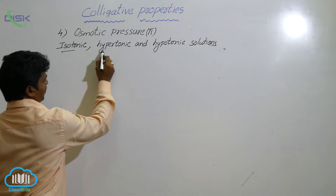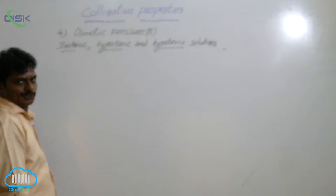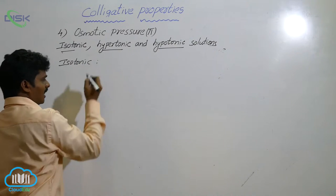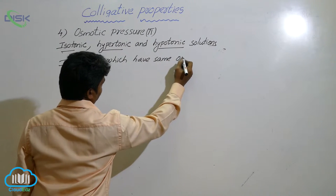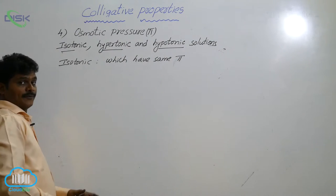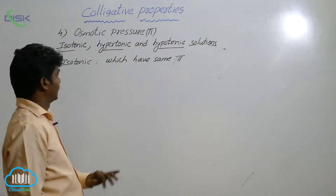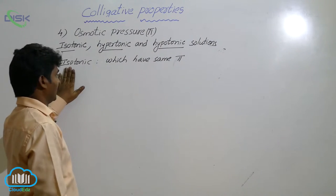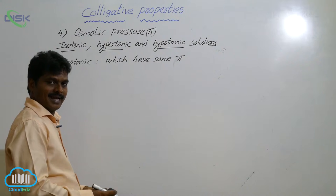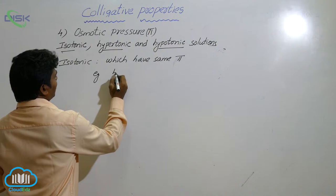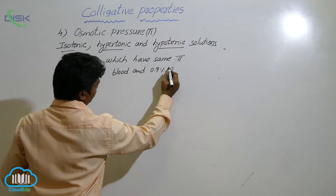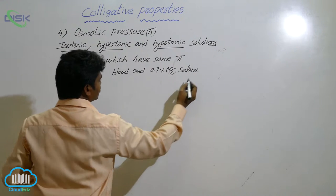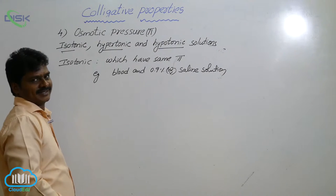Isotonic solutions are solutions which have the same osmotic pressure. Osmotic pressure is denoted as pi. If two different solutions have the same osmotic pressure, they are said to be isotonic. For example, blood and 0.9% w/v saline solution are isotonic with each other.